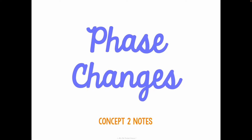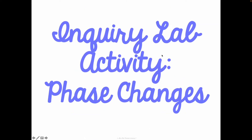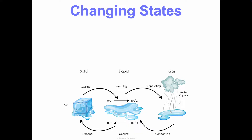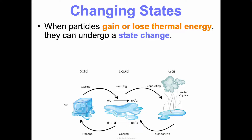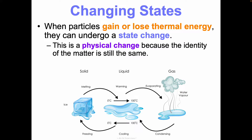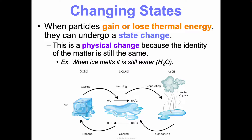We're going to be talking about phase changes, or changes in state of matter from one state or phase to the next. When particles gain or lose thermal energy, they undergo a state change, and this is considered a physical change, not a chemical one, because the identity of the matter is still the same. When ice melts, it's still water — still two hydrogen atoms bonded to one oxygen atom — just in a different form based on the amount of energy it has.